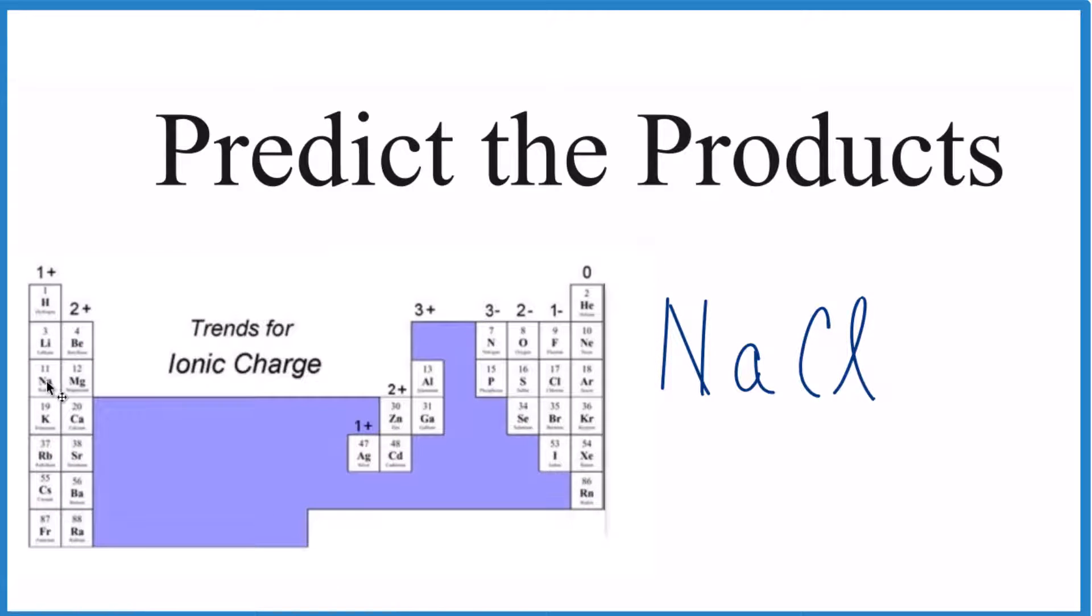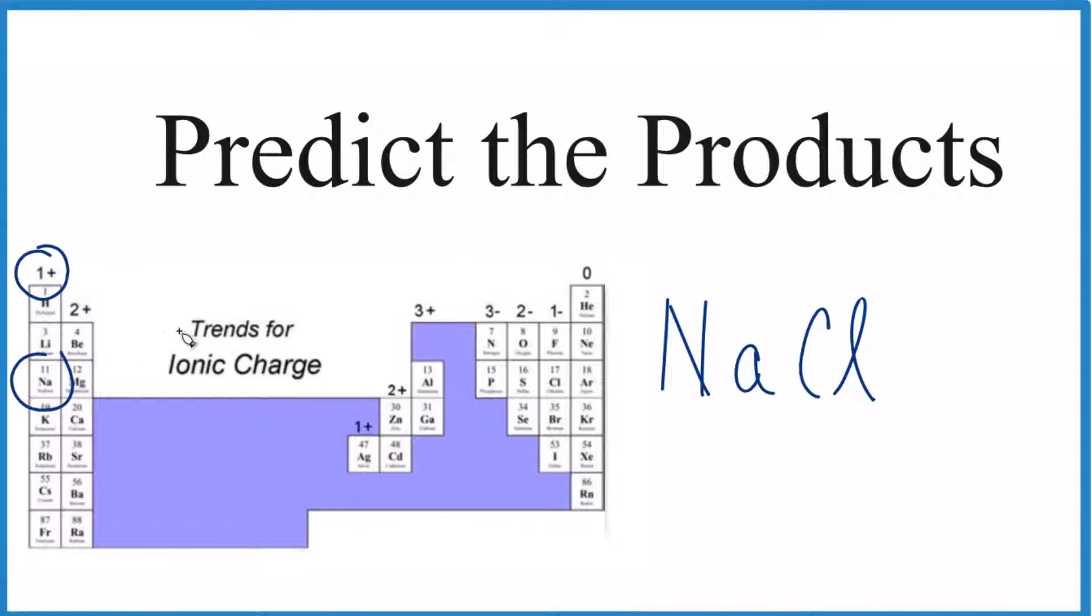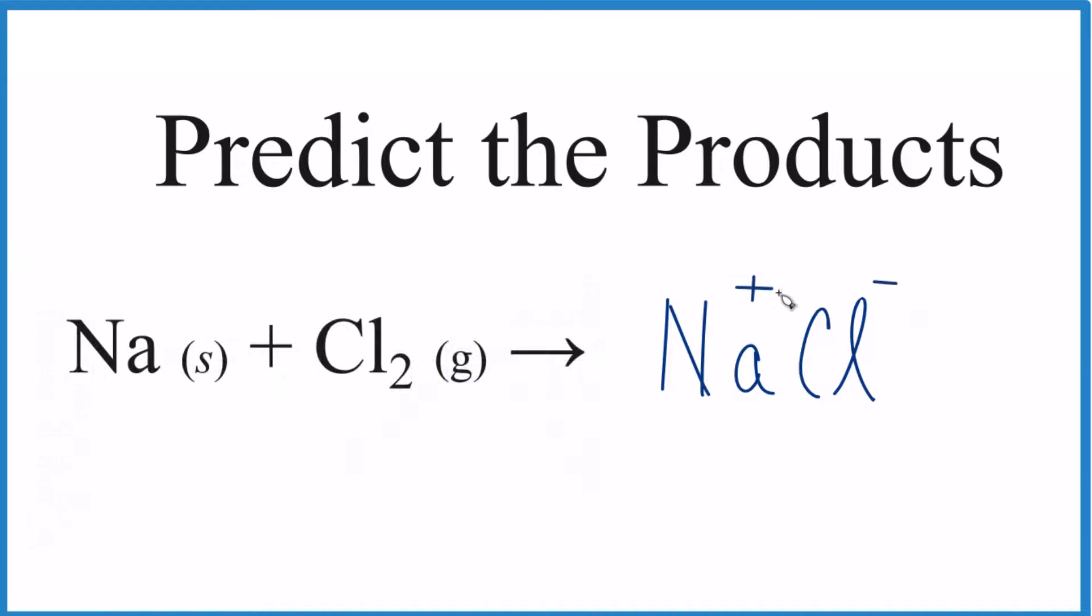Sodium is in group one, so sodium is right here. That's going to be 1+ and chlorine will form 1- ions. So we know the charge and you can see the plus and the minus, they balance out. So we have a neutral compound.